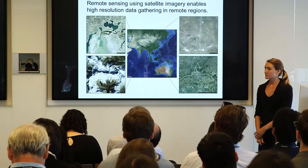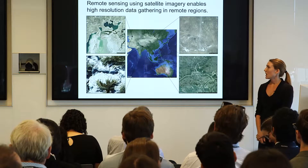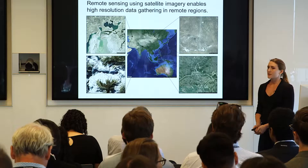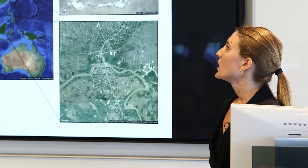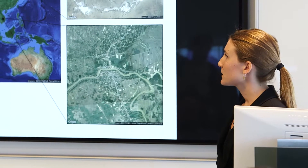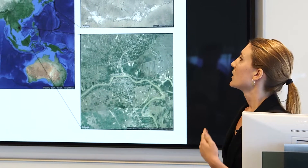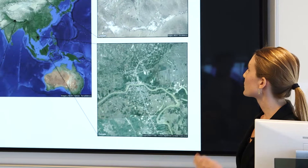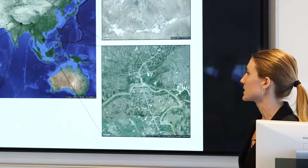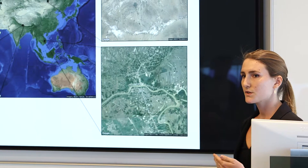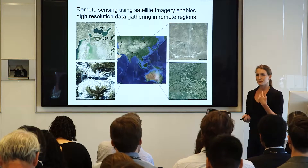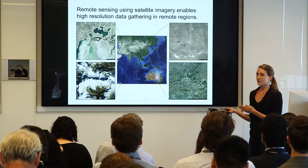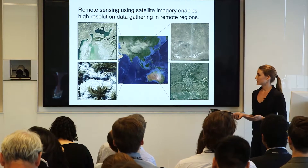Remote sensing data — and we're specifically going to talk about satellite images — has afforded a wealth of research that before we couldn't get data on. Now we can assess climate measures such as snow cover or groundwater quality. We can track road cover and estimate population density. This is a new paradigm: we don't have to send people to gather this data. We have satellites orbiting the Earth taking these images, and researchers can sit in their lab, download these images, and train a predictor based on them.